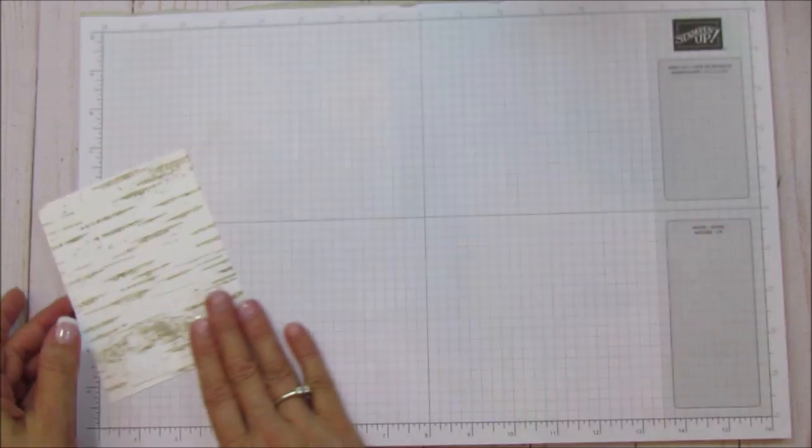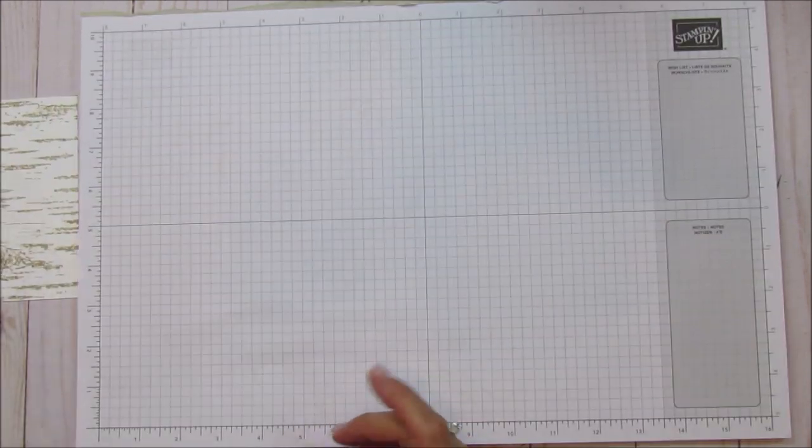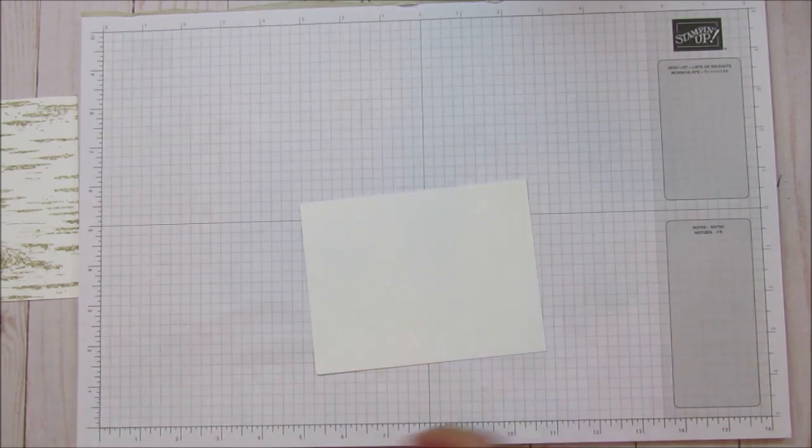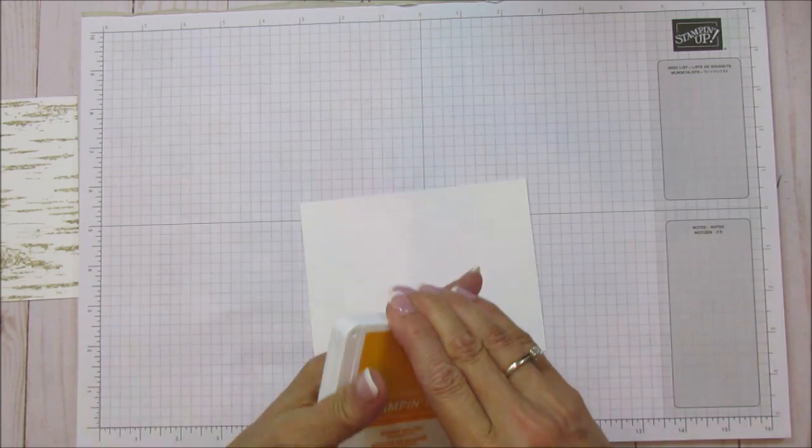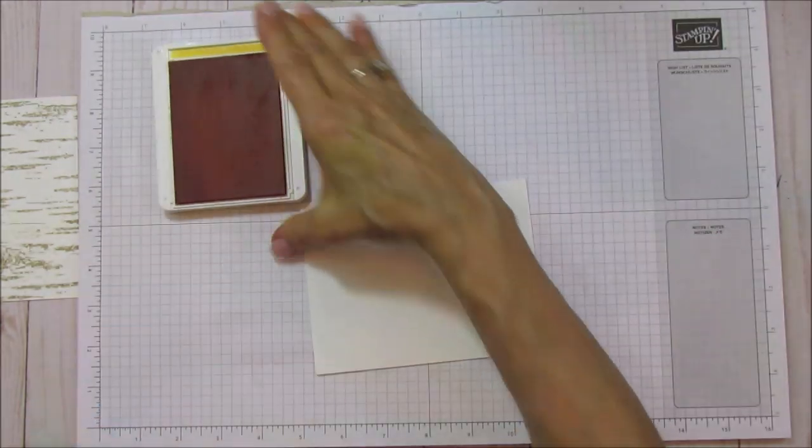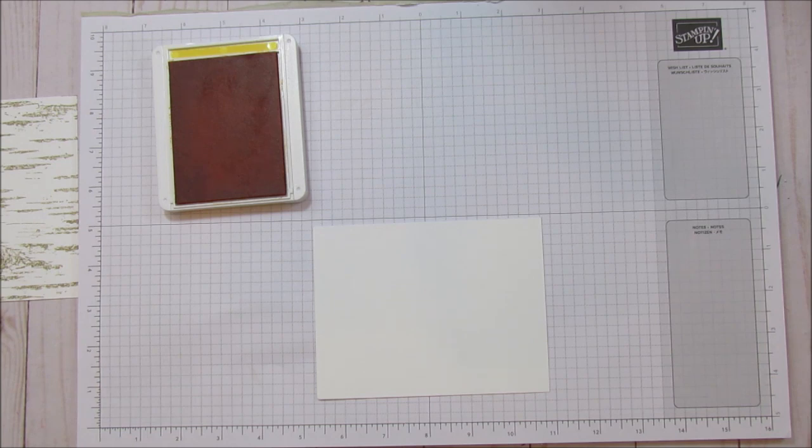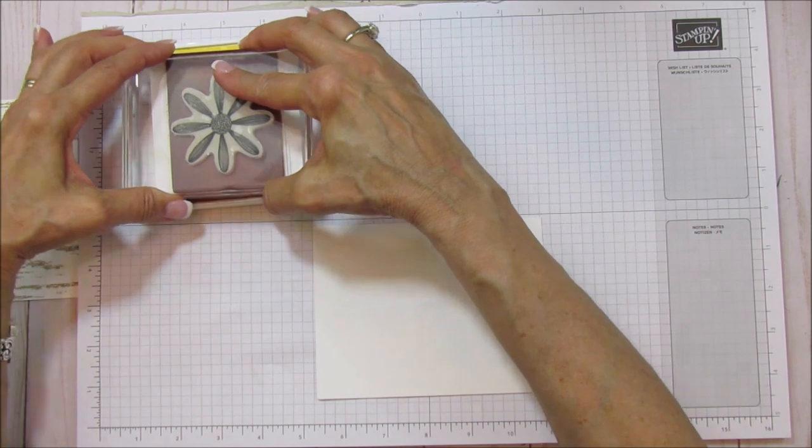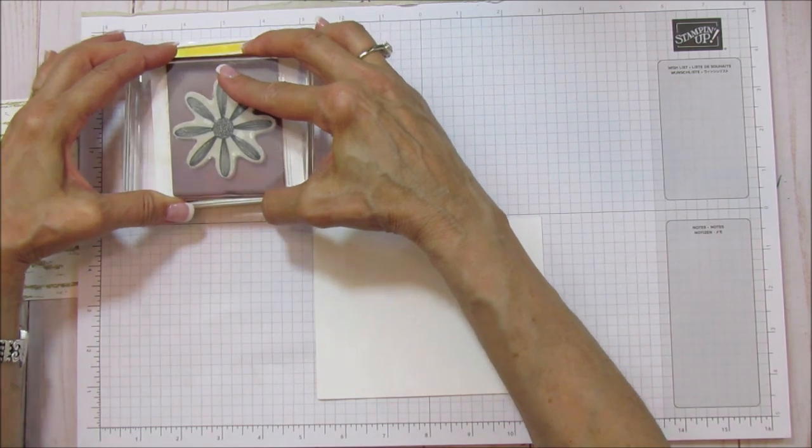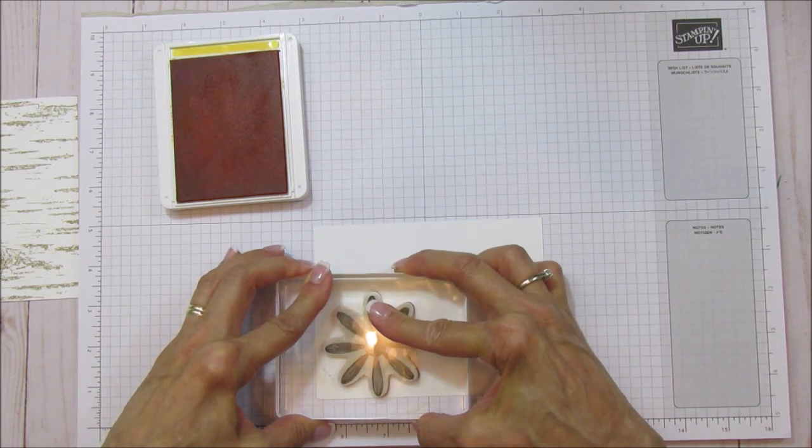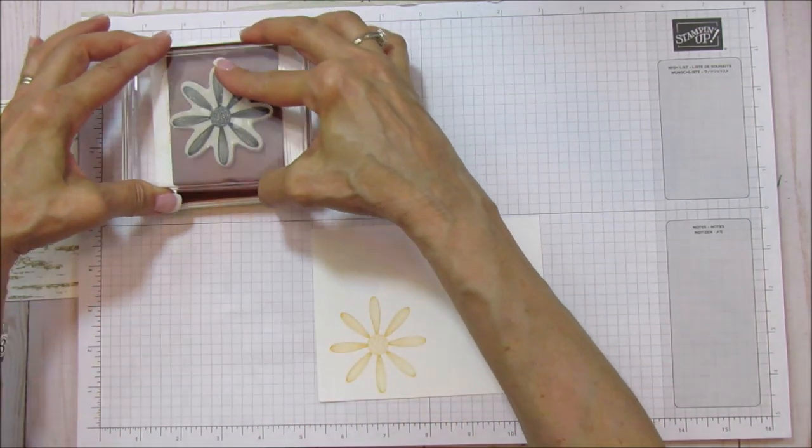Next thing we're going to go ahead and do is we're going to stamp our daisies. I'm using mango melody again. And then we'll stamp our leaves after that. So let me get my daisies out here. And we want two big ones and then one small.